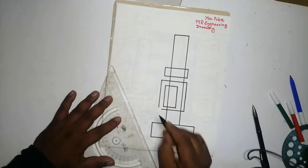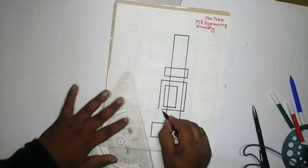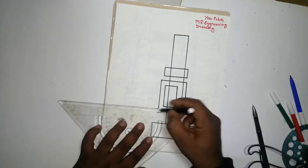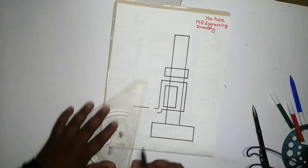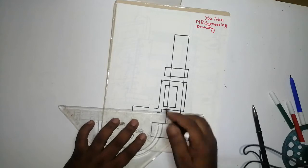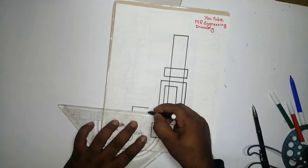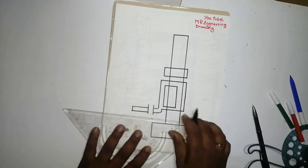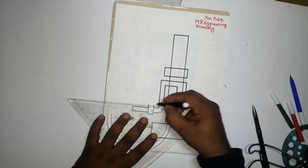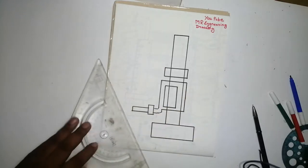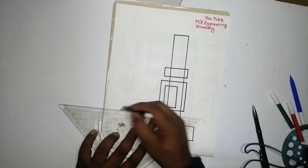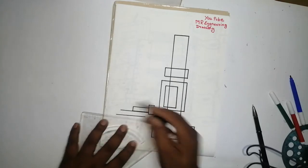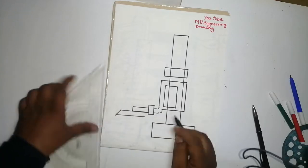After that, take a little bit curve and one more curve. I have joined this line like this. And then like this. Like this. This is the scriber for marking purpose. This is the scriber.